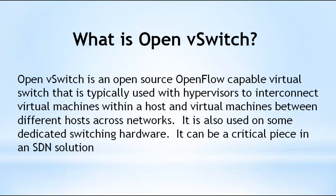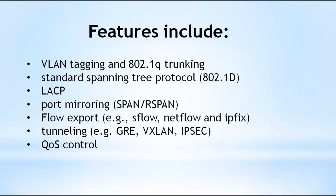Briefly, before we jump into a demo of OpenVSwitch — what is it? OpenVSwitch is an open source, OpenFlow-capable virtual switch that is typically used with hypervisors to interconnect virtual machines within a host and between different hosts across networks. It is also used in some dedicated switching hardware and can be a critical piece in an SDN solution. OVS supports many traditional switch features such as VLAN tagging and 802.1Q trunking, standard spanning tree protocol, LACP, port mirroring, flow export, tunneling, and QoS control.